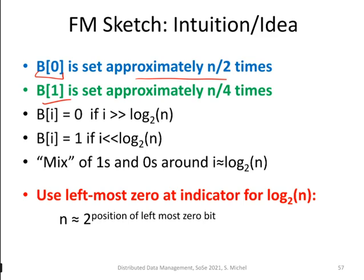So in the middle, between the zeros and the ones, where you have a mix of zeros and ones, this is roughly corresponding then to the logarithm to base 2 of n. n is what we want to compute, and then what the authors proposed is to use the leftmost zero as the indicator. This is a rough idea, and then you had also this correction factor in, as we saw on the previous slide.